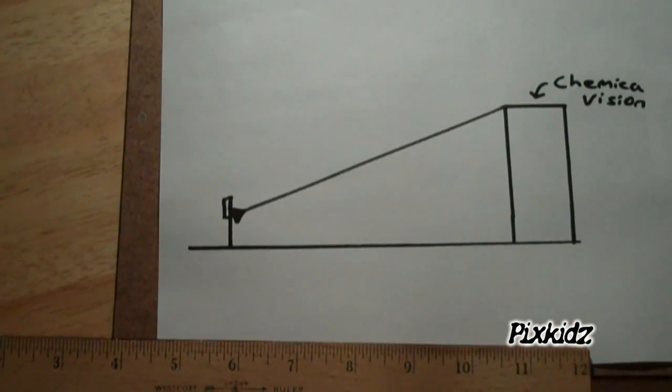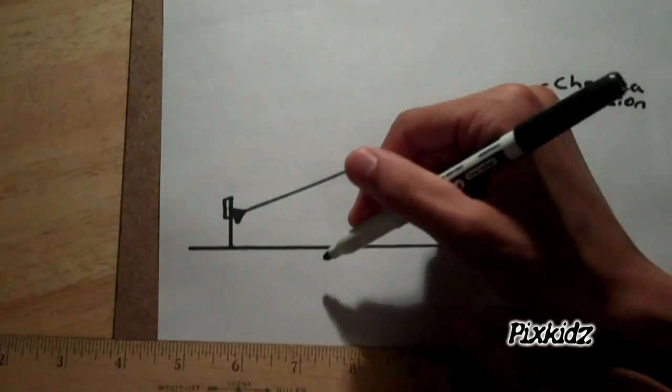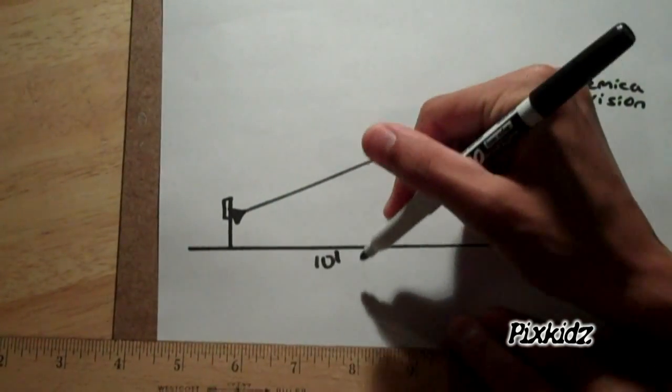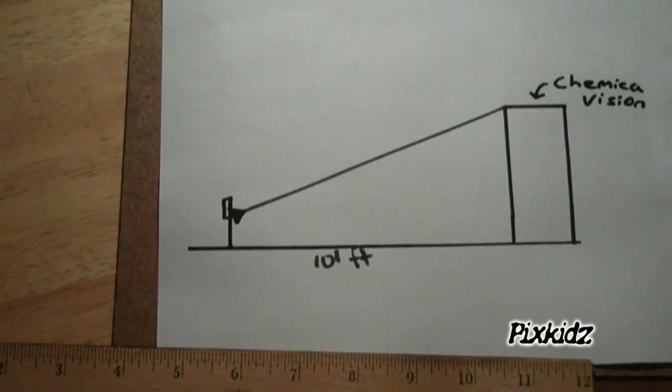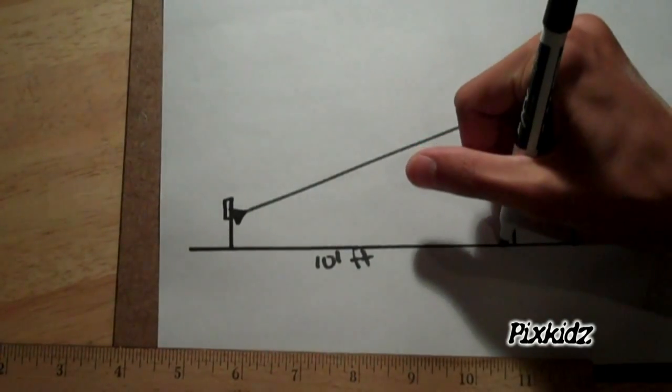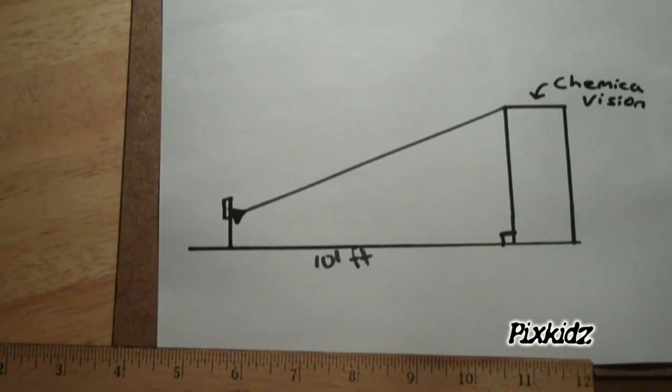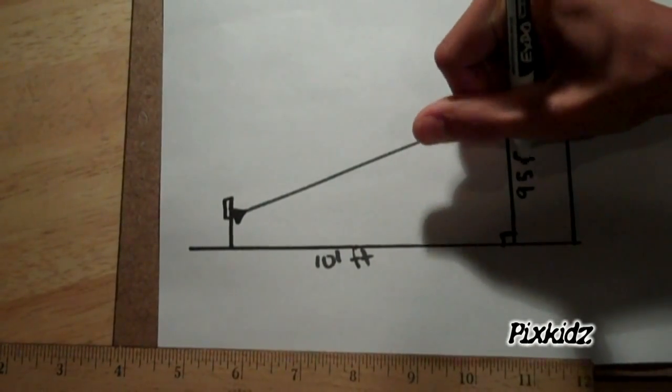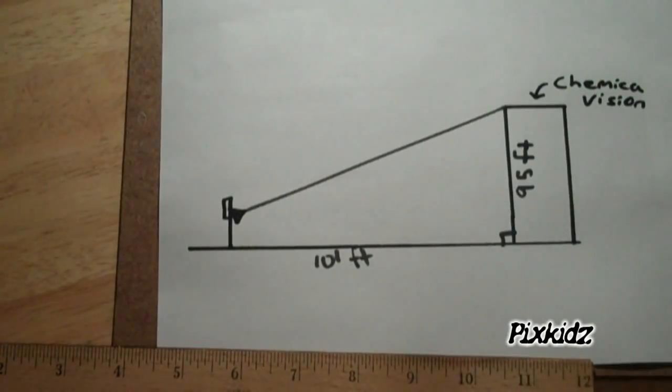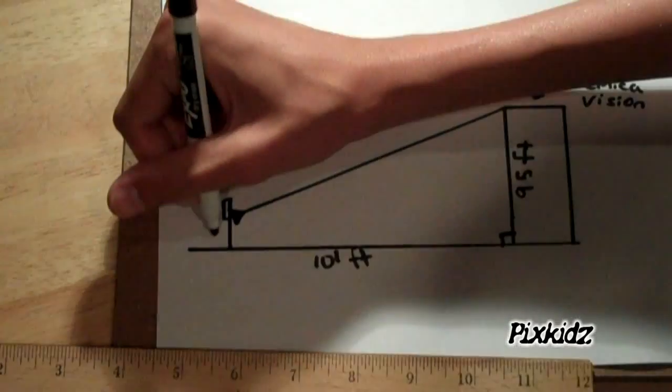Now I do know that the hoop is 101 feet away from the bottom of the bell tower church, which is obviously at a right angle. I also know that the church is 95 feet tall, and I know that the hoop itself is 7.5 feet tall.